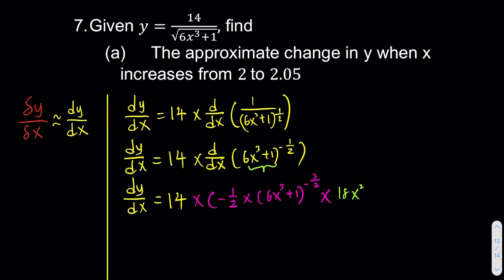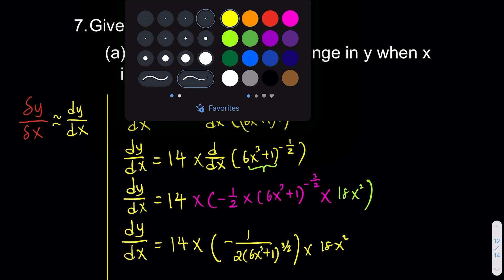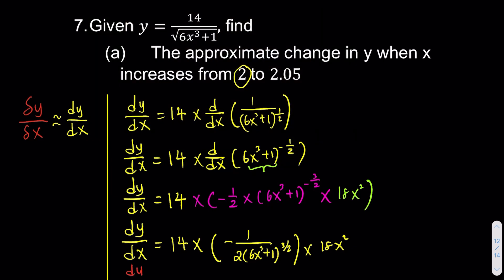Once we have everything, we times with 14. So the simplified dy over dx is 14 times negative 1/2 of (6x³ + 1) to the power of negative 3/2 times 18x². They say that x is equivalent to 2, so we substitute in 2. So 2³ is 8, 8 times 6 is 48, 48 plus 1 is 49.